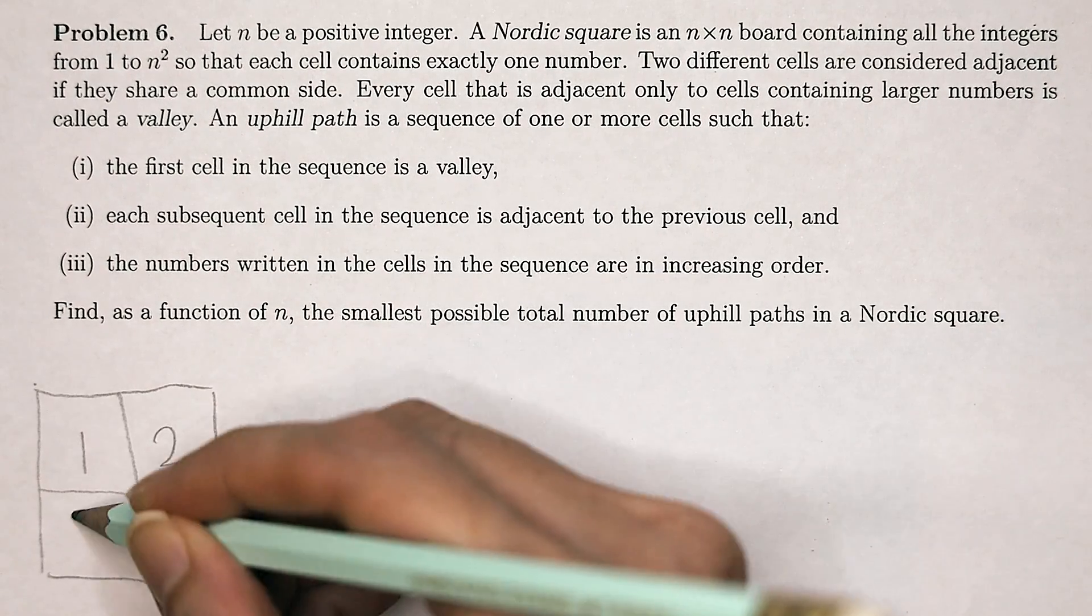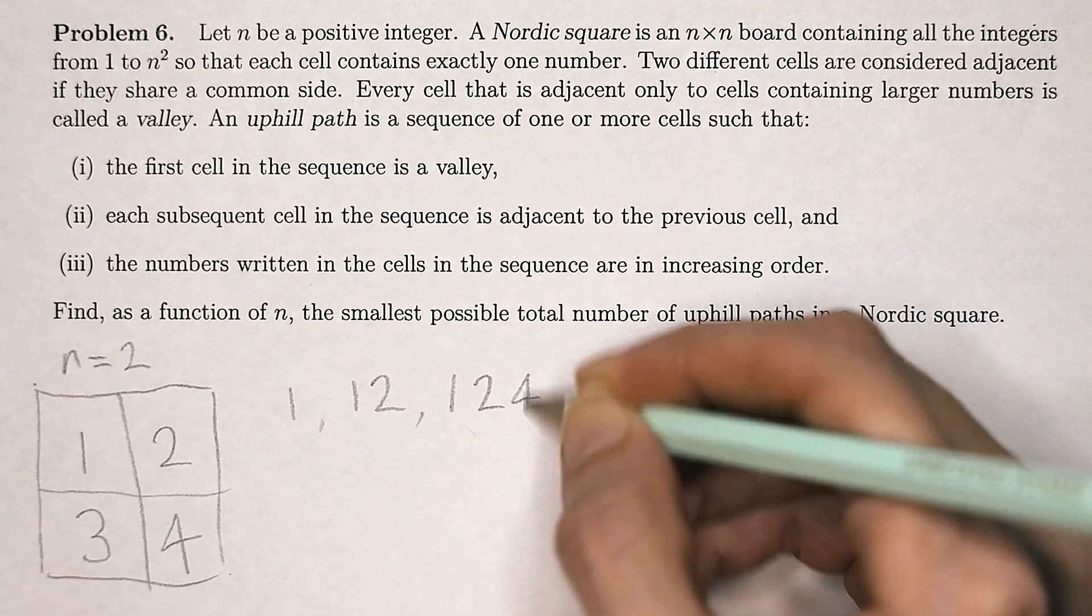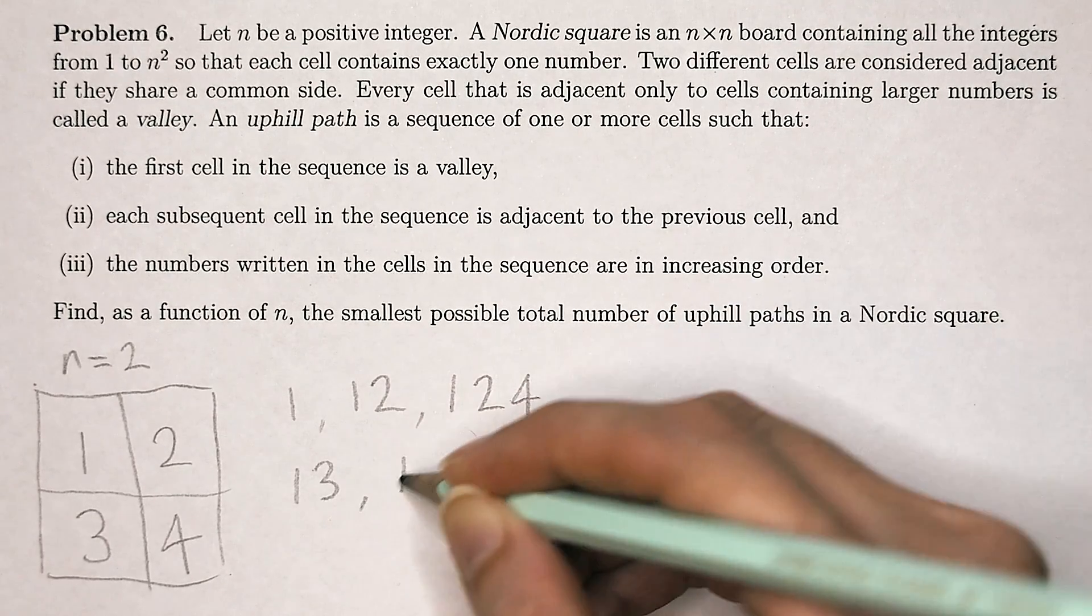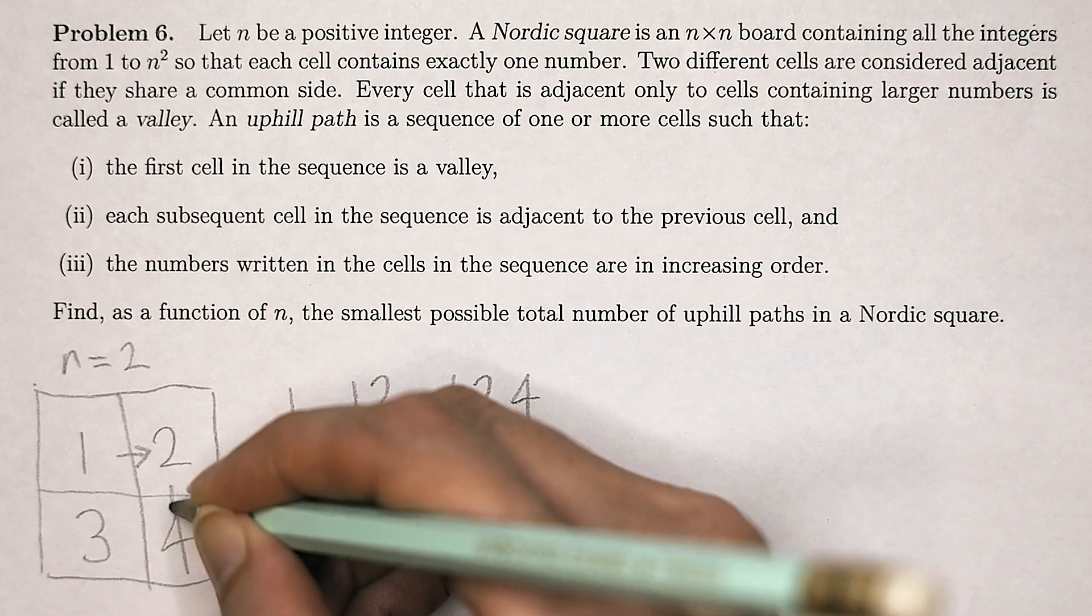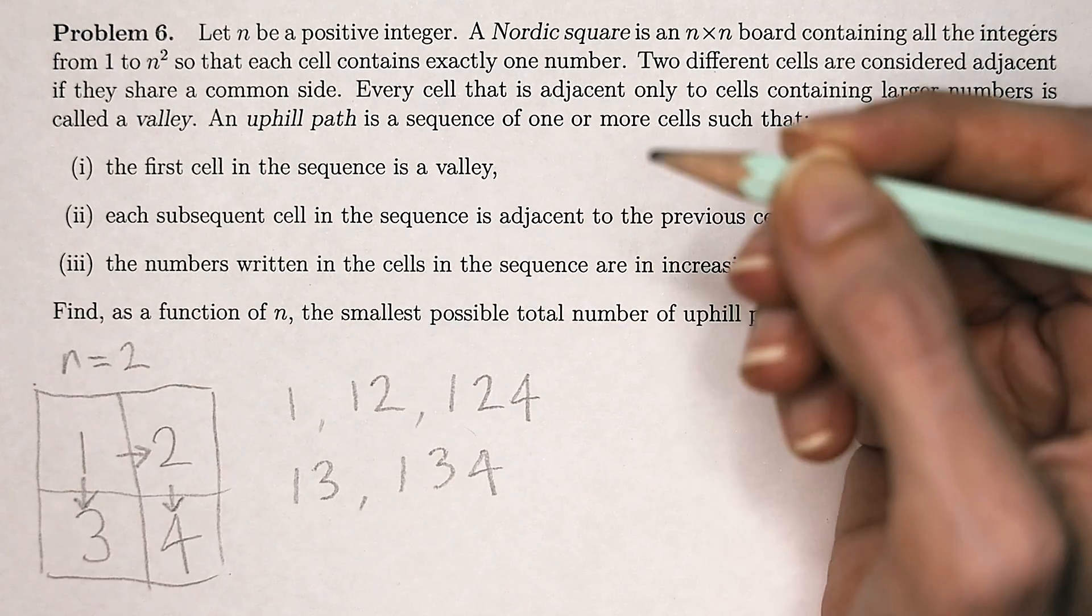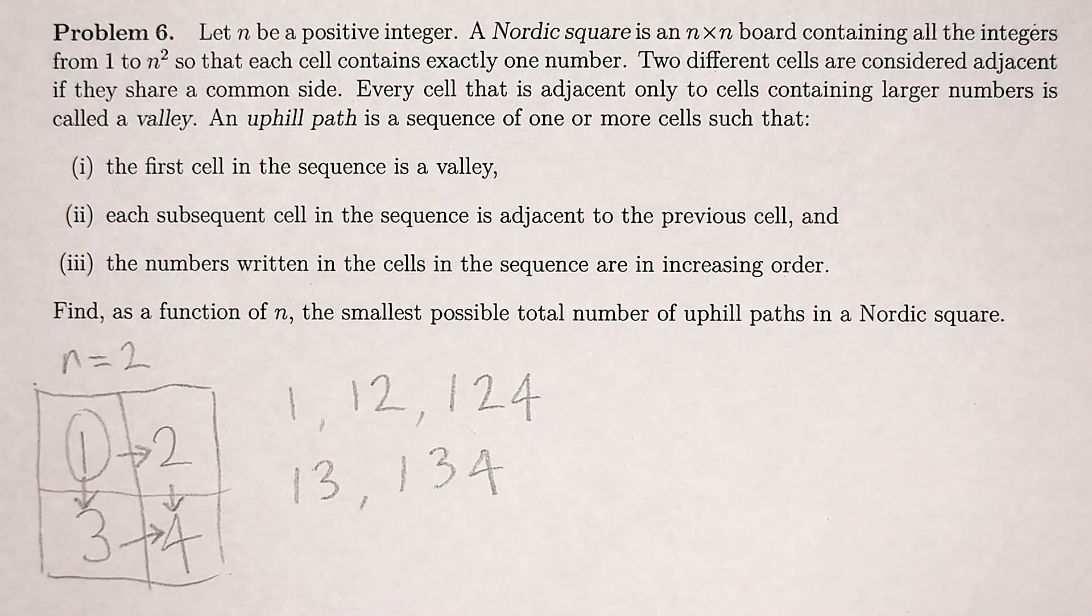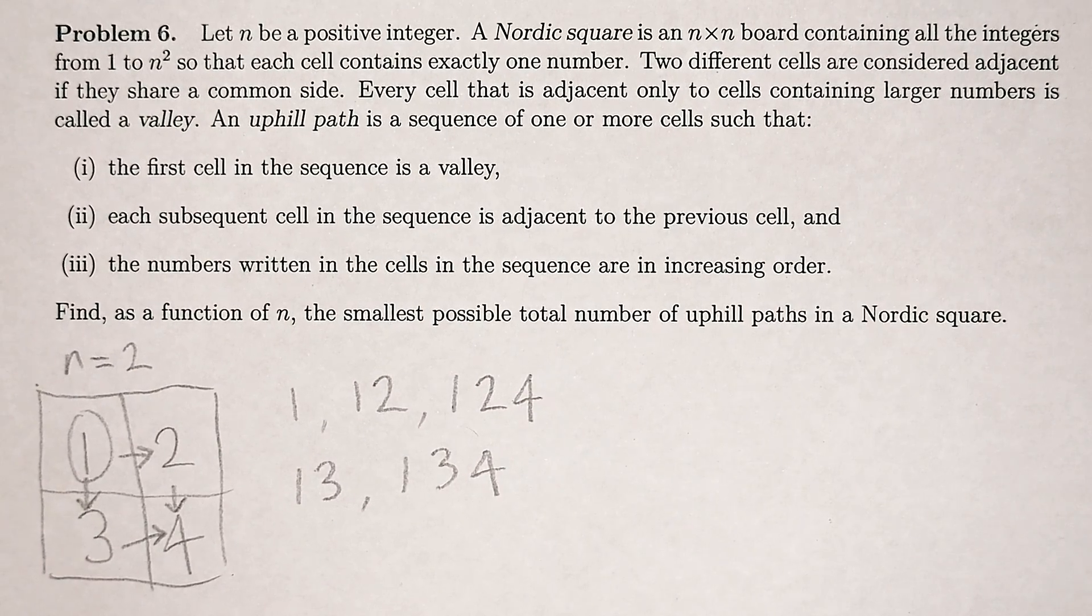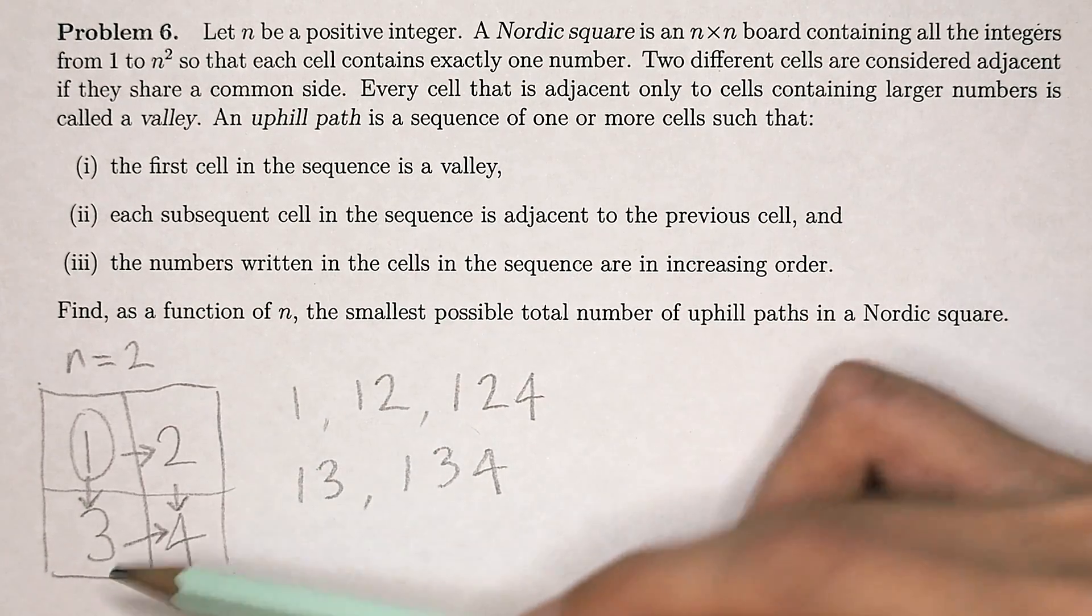This is an example of a Nordic square where n is equal to 2. Here, 1 is our valley and we could have six possible uphill paths: 1 to 2, then 1 to 2 to 4, 1 to 3, 1 to 3 to 4, and we also have to include the path of length 1 which is just the valley. We could have placed these numbers in the squares in any order.